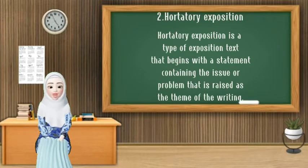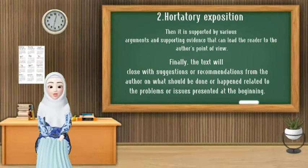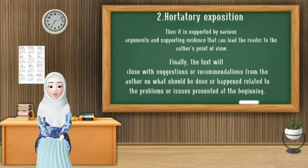For the next type is hortatory exposition. Hortatory exposition is a type of exposition text that begins with a statement containing the issue or problem raised at the time of writing. Then, it is supported by various arguments and supporting evidence that can lead the reader to the author's point of view. Finally, the text will close with a suggestion or recommendation from the author on what should be done or happen related to the problem or issue presented at the beginning.